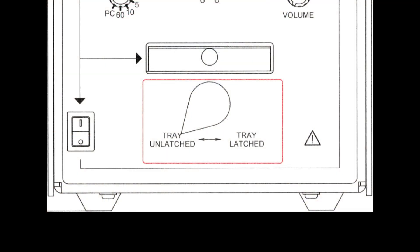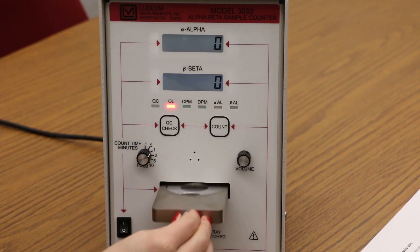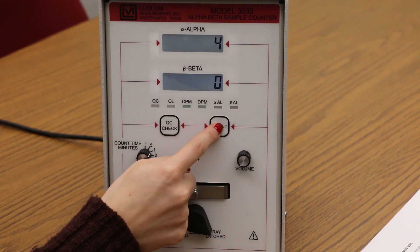A tray switch which is a rotary control used to latch the sample tray. It also lifts the sample tray into position and blocks all extraneous light from the detector. The tray switch should always be in the latched position while counting.